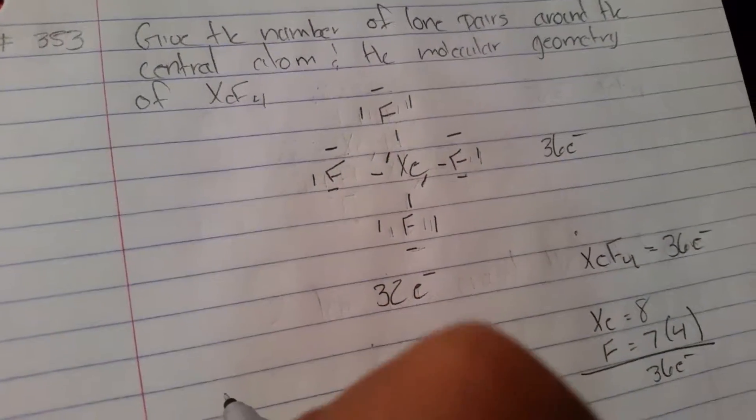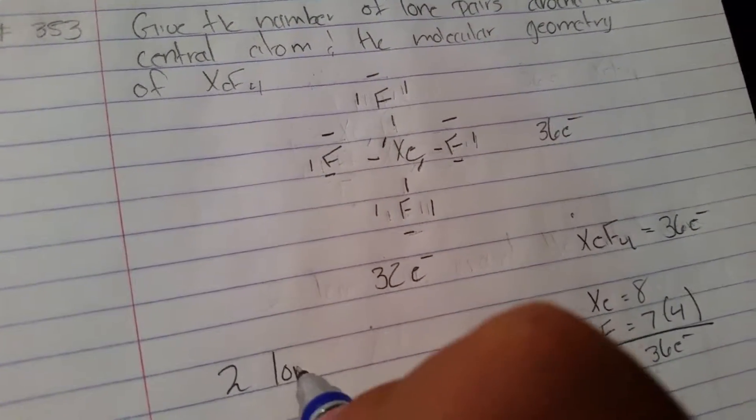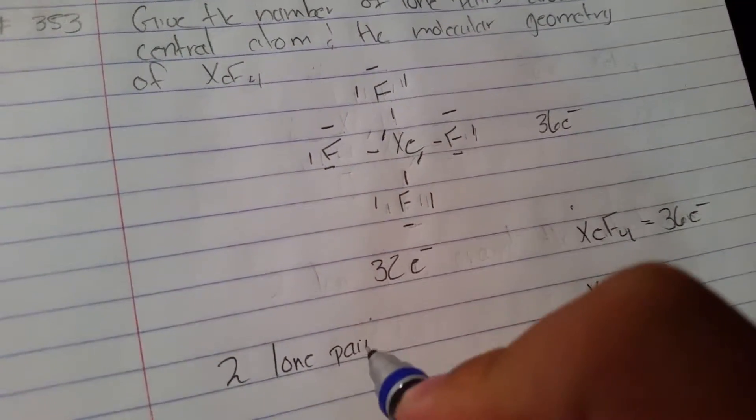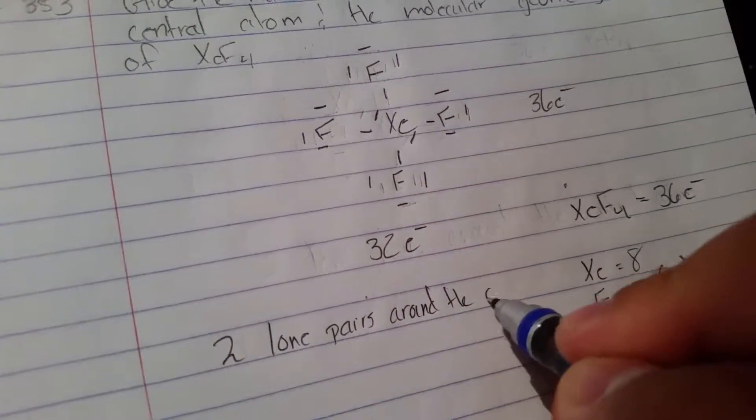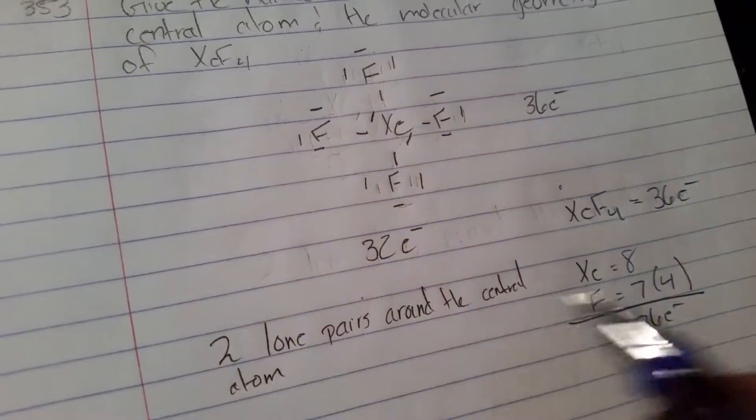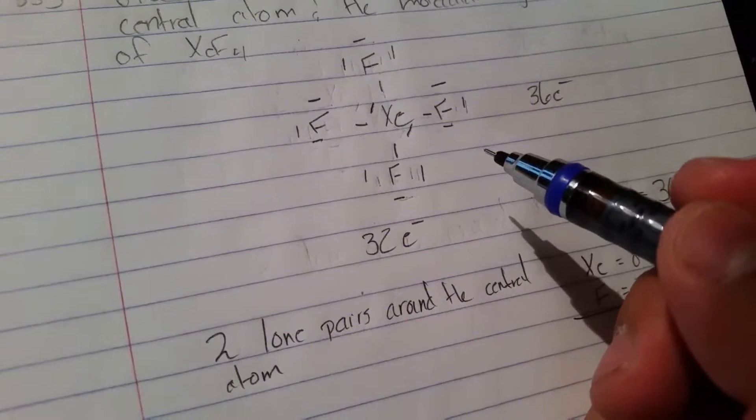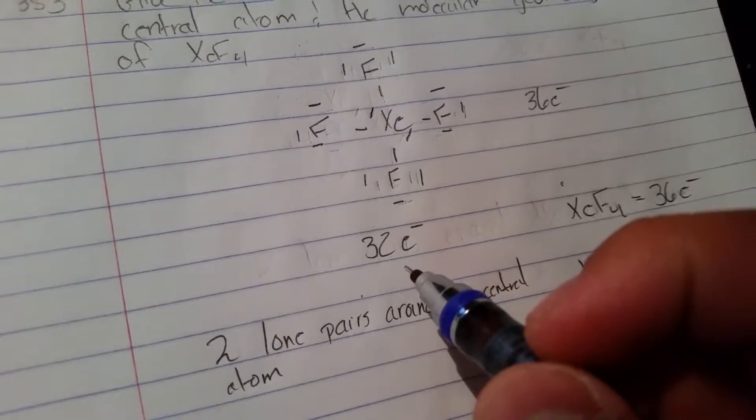So that means that we have a total of two lone pairs around the central atom. And then because of this structure right here, the molecular geometry is square planar.